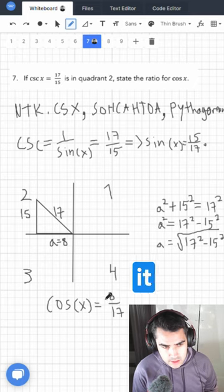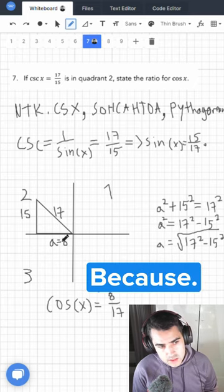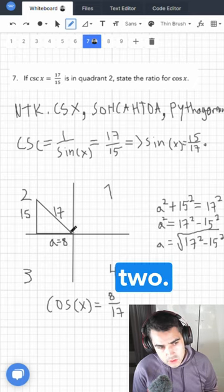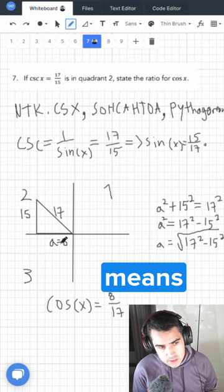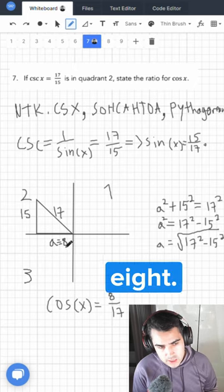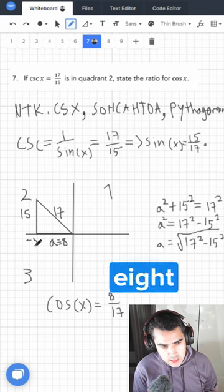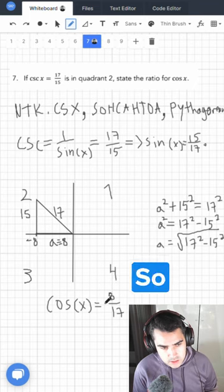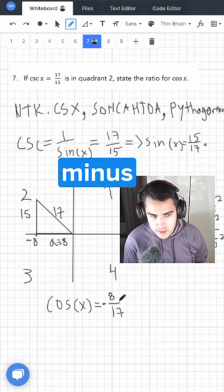Now why is it negative? Because it's in quadrant 2, and so this means that it's minus 8, because this is minus 8 on the Cartesian plane. So this is actually minus 8.